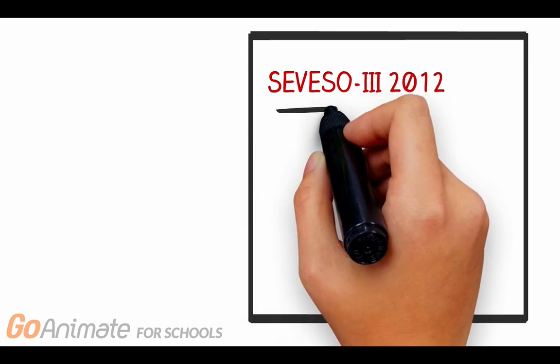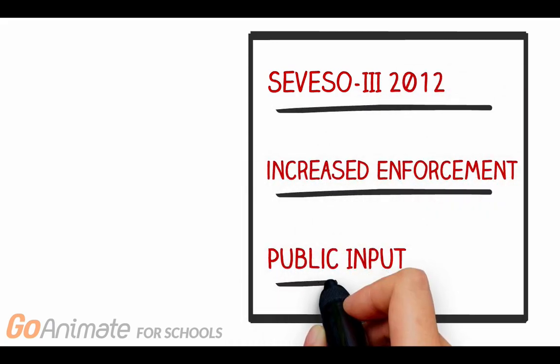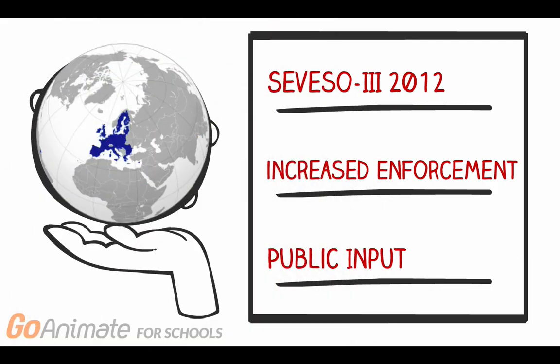Recently in 2012, the third Seveso Directive came out, which increased public input on safety regulations and increased legal capabilities of persons affected by a disaster. Thanks to the Seveso Directives, the number of industrial accidents have been decreasing steadily.